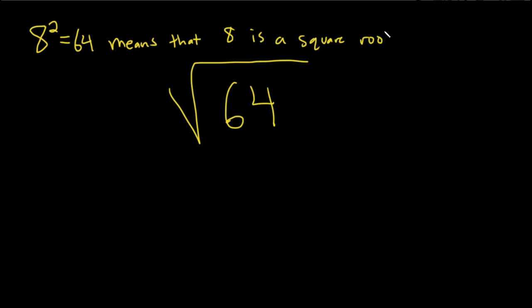However, at the same time, if you take negative 8 and you square it, you also get 64. And so this means that negative 8 is a square root of 64.